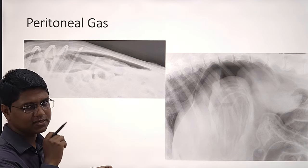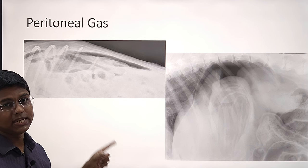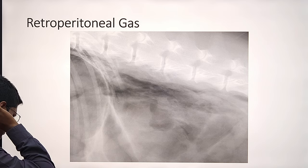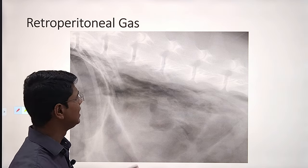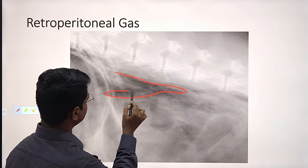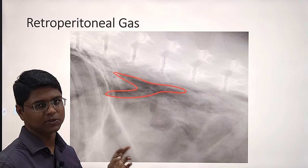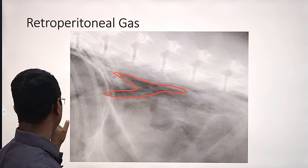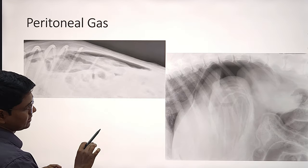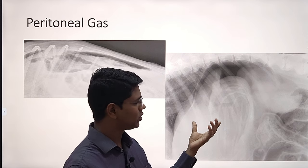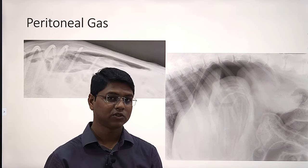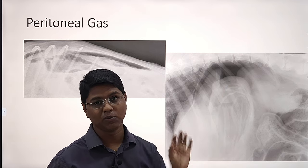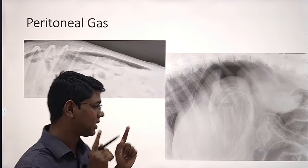If you are suspecting peritoneal gas, you have to do horizontal beam radiography along with left lateral recumbency. Retroperitoneal gas — just like peritoneal gas — is very rare, but you can find this gas opacity in the retroperitoneal space. Most common cause is trauma. If there is some penetrating wound, air may enter. Also, when there is trauma, there may be subcutaneous emphysema, making it very difficult to diagnose whether air is present inside the peritoneum because of superimposition.